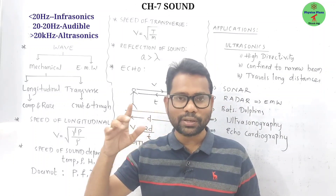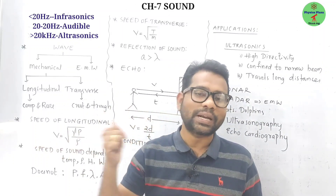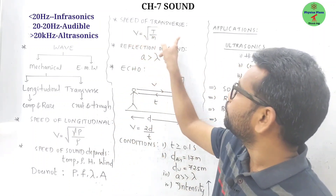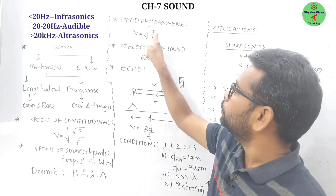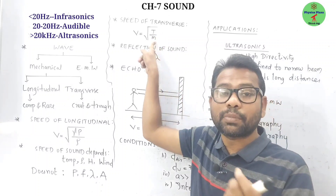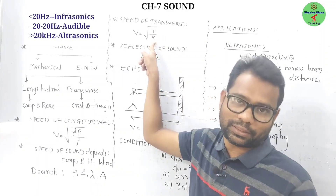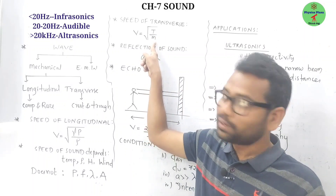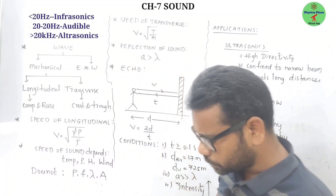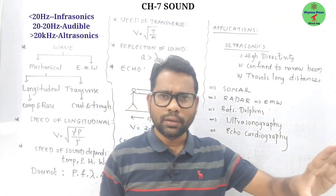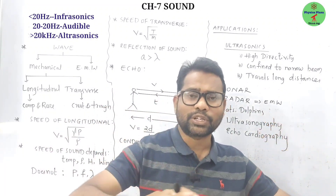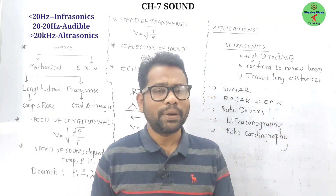Waves produced on a stretched string are transverse waves. The speed of a transverse wave is v = √(T/m), where T is tension and m is the linear mass density, that is, mass per unit length.